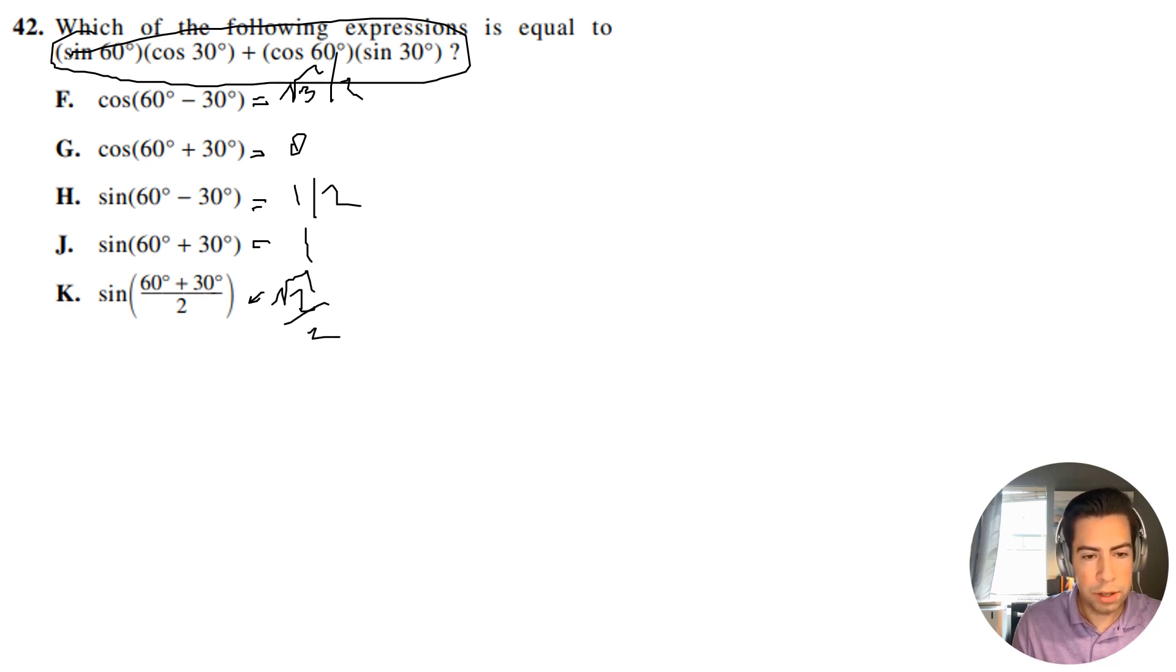Okay, so now I want to simplify this expression here. Sine of 60 is going to equal root 3 over 2. And notice that cosine of 30 is also equal to root 3 over 2.